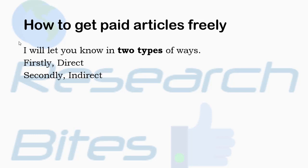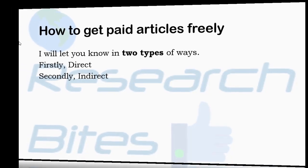I categorize the methods into two types: firstly, the direct method, and secondly, the indirect method. The direct method makes it easy to get the article anywhere, whatever place you are — you can get the article at any time for free. With the indirect method, there are chances that some articles are not available through direct methods, or you are not able to get access via direct methods.